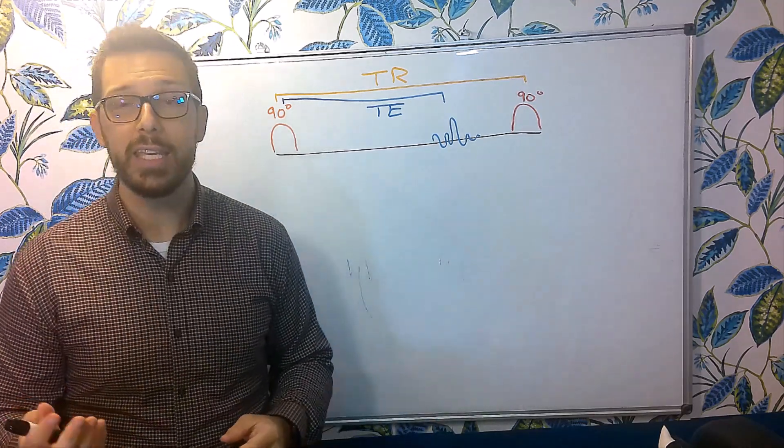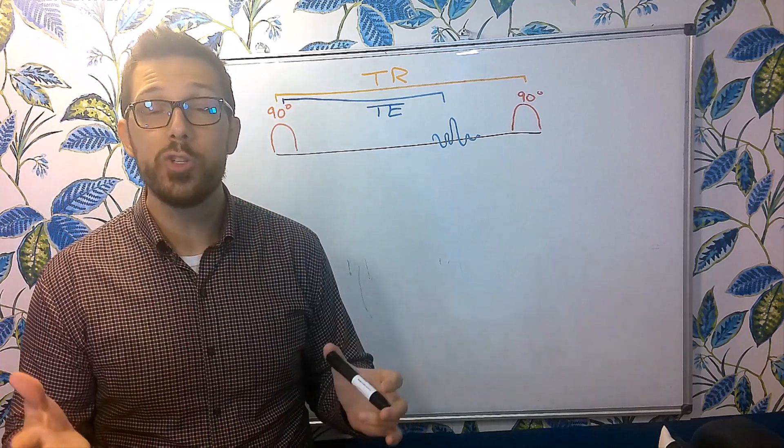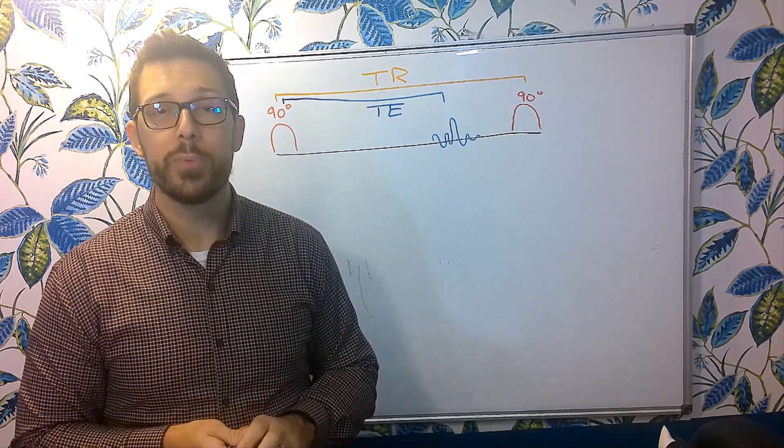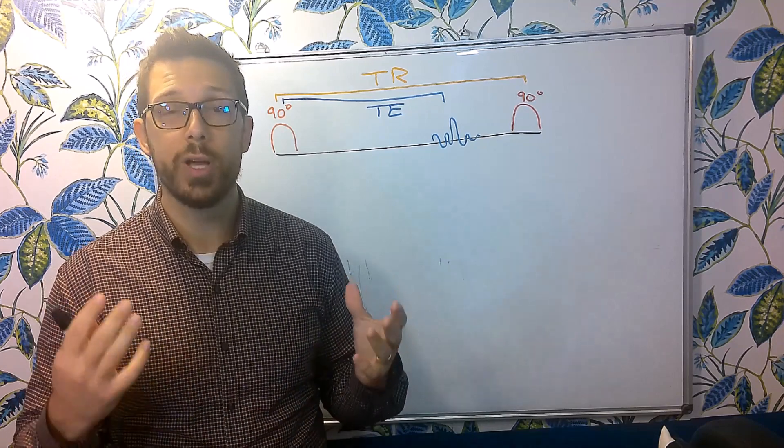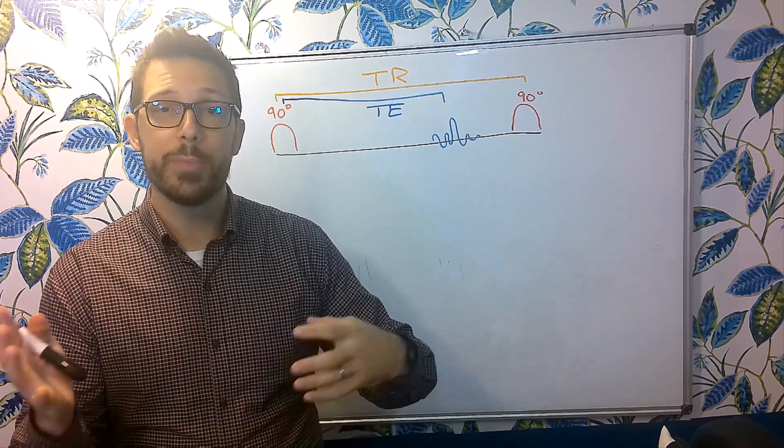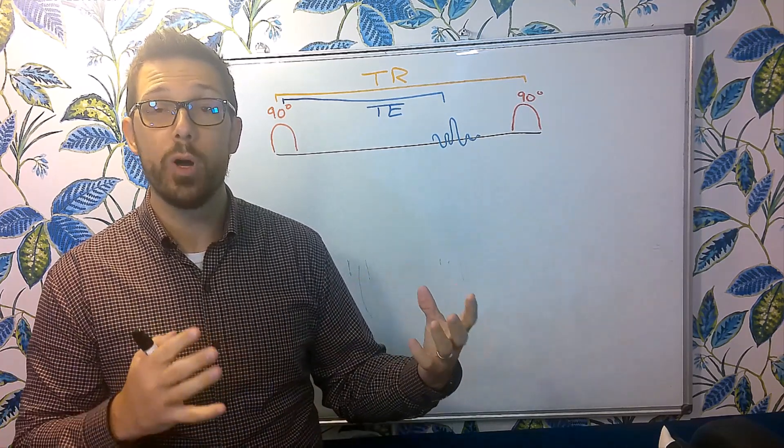Now our echo time TE controls T2 contrast in our image. So it's a primary controlling factor for T2 contrast. Whereas TR is a primary controlling factor for T1 contrast.